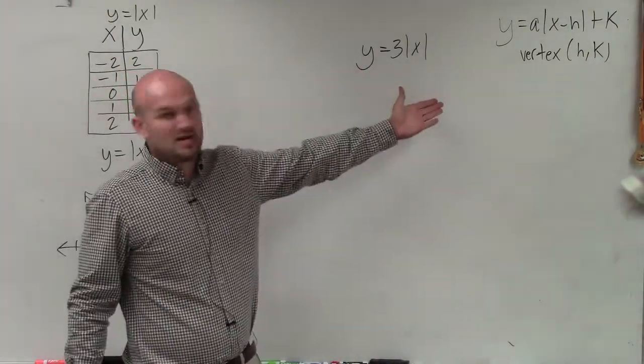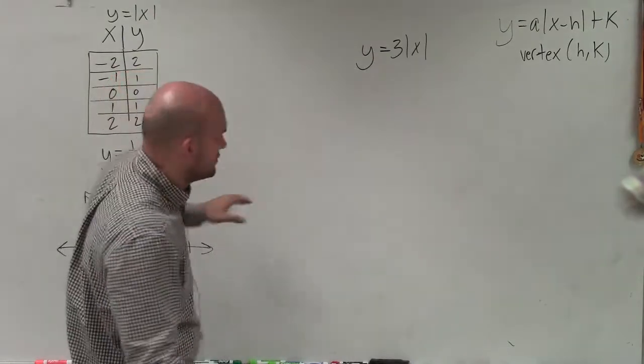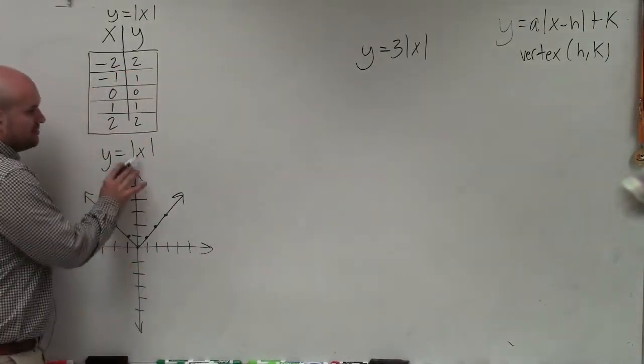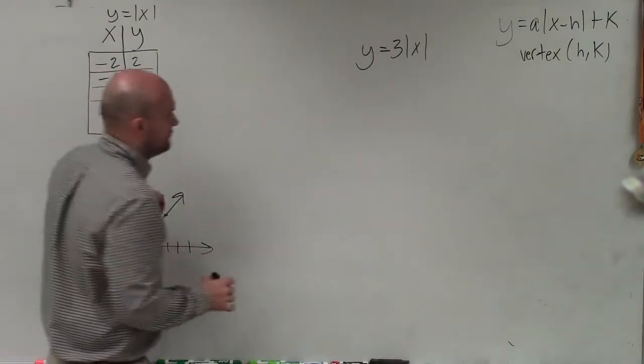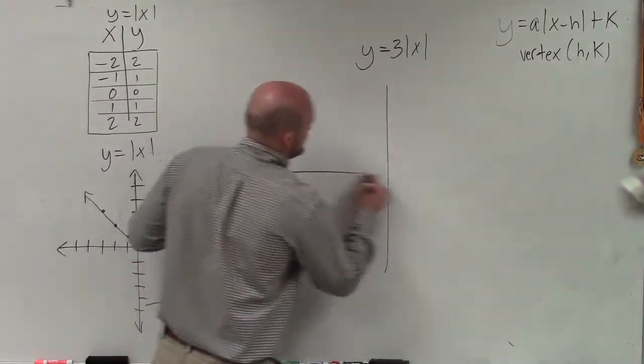Notice I'm not adding or subtracting anything. So there's not going to be a shift. That means my vertex is still going to be at 0, 0, where you can say here's the parent graph for y equals absolute value of x. So my vertex is going to remain the same.